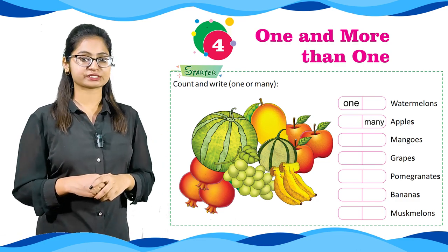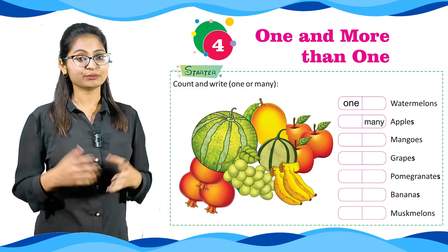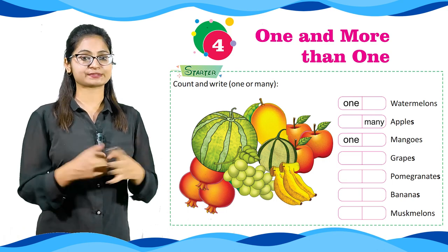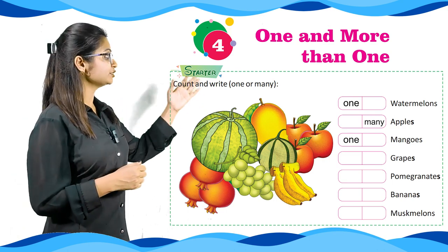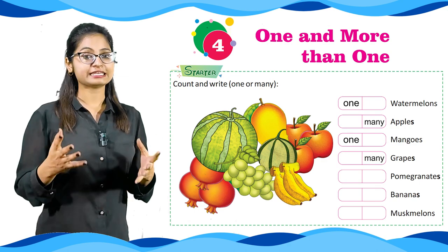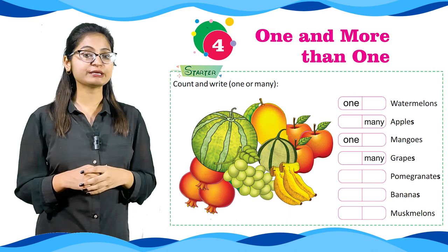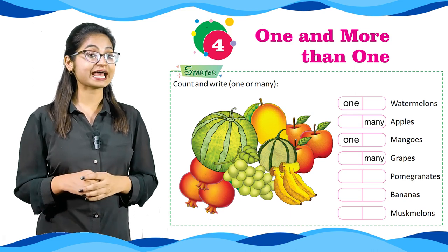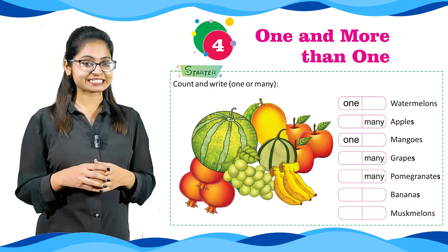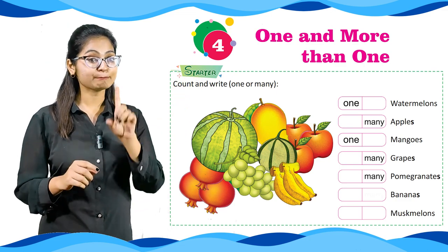Next we have mangoes. As we can clearly see, there is one mango, so we will write one mango. Next we have grapes — we can see a bunch of grapes, so we write many. Next we have pomegranate — we can see there are three pomegranates, so we write many. Moving towards banana, we can clearly see there are many bananas, so we write many.